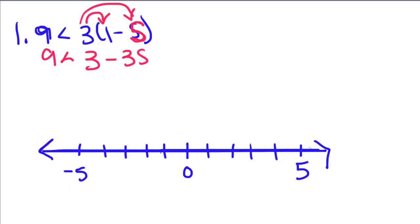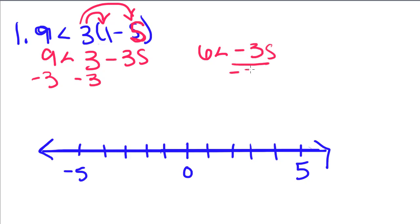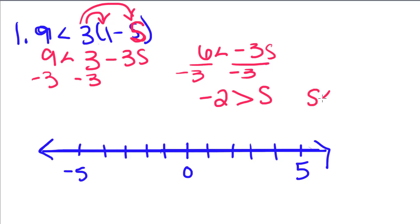I'm going to subtract 3 from both sides and I get 6 is less than negative 3s. I'm going to divide by negative 3 on both sides. If you divide by a negative, you flip your sign. So negative 2 — and we're going to flip it — is greater than s. That means s is less than negative 2. Either way is correct.